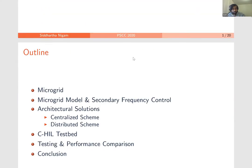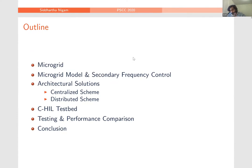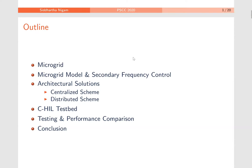Let me jump straight into the outline. I think we all know the notion of microgrids so far, so I'm going to skip that part and talk about the secondary frequency control problem. Before defining that problem, I'm going to describe the model we have adopted. Then there are two architectural solutions we have considered: the centralized scheme and the distributed scheme. We implement those two schemes on our controller hardware and loop testbed, compare them using two performance metrics, and then conclude.